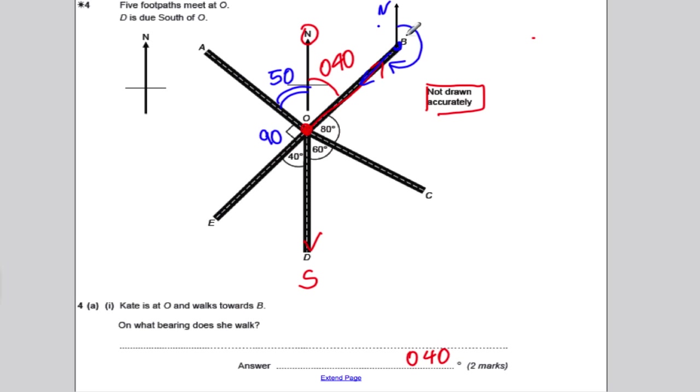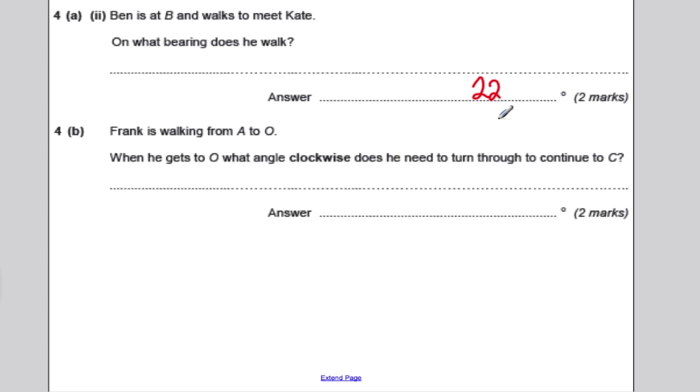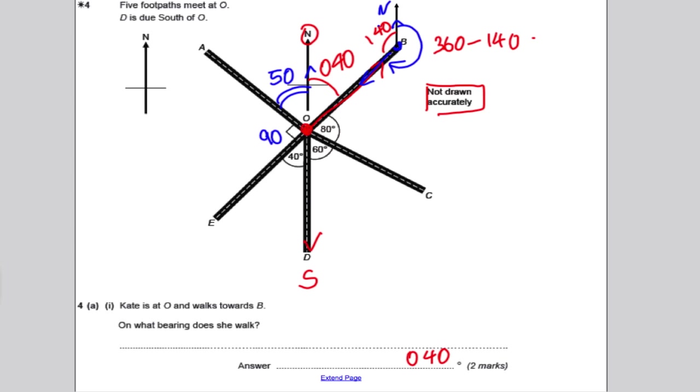Now, we're not supposed to measure that. We're supposed to use angle facts. If that's 40, we know that because the two north lines are parallel, these two angles are interior, or C angles. They add up to 180. So that must be 140. So the outside angle here is 360 subtract 140. So just write 360 subtract 140, and you'd get 220. So the answer for this one is 220. A nice easy two marks. So if you added that to the previous two marks, you've got four easy marks now.